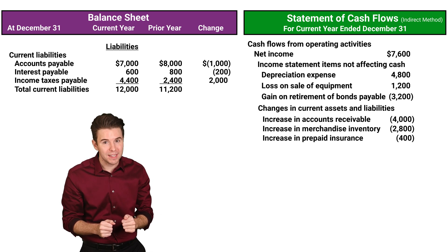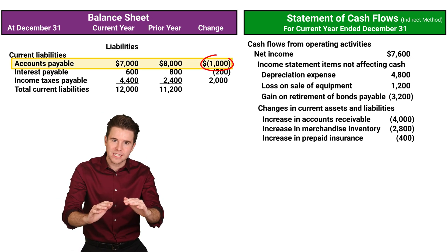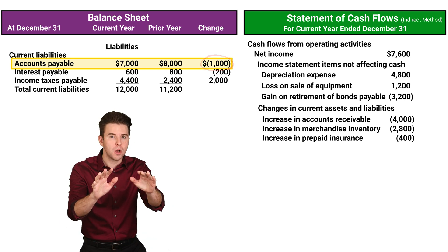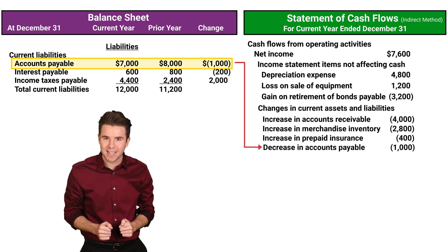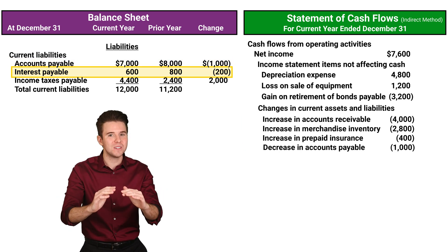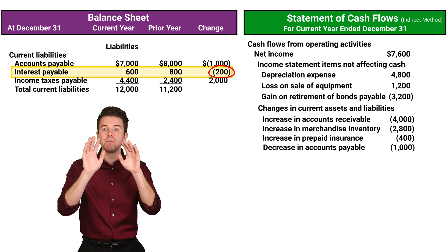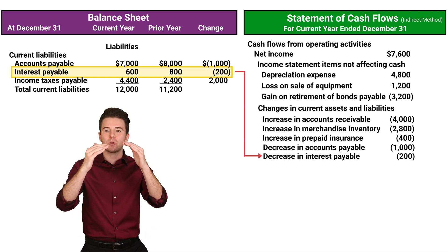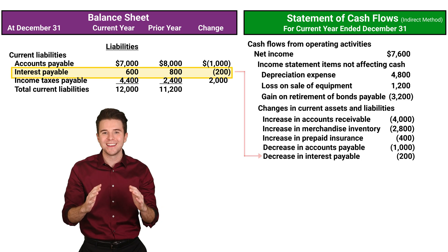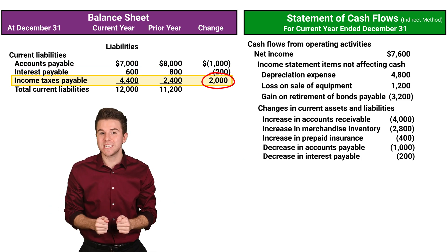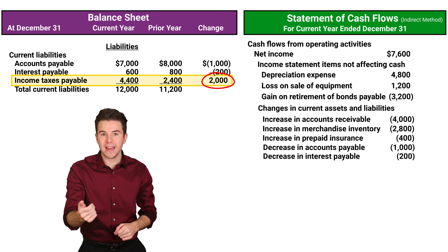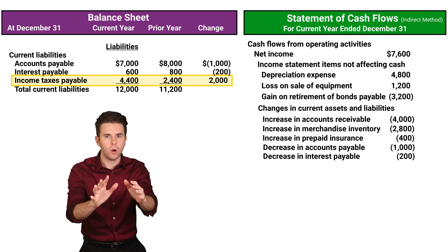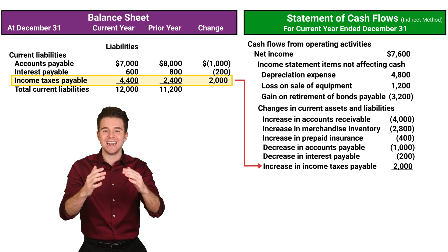Next, we look at current liabilities. We see that accounts payable decreased, meaning cash paid is more than purchases recorded, so we subtract the decrease from net income. Interest payable also decreased, meaning cash paid for interest is more than the interest expense we reported on the income statement, so we subtract the decrease from net income. We also see an increase in income taxes payable, meaning cash paid for income taxes is less than the tax expense reported on the income statement, so we add the increase back in to net income.